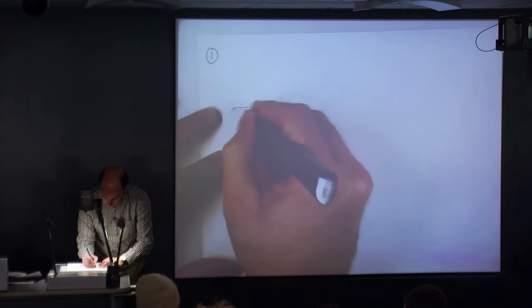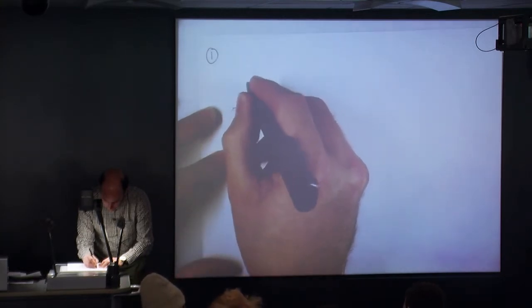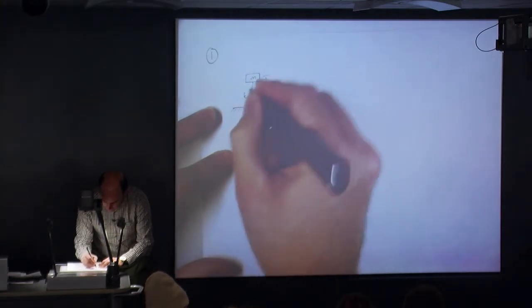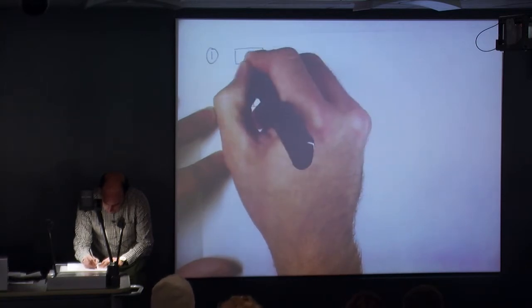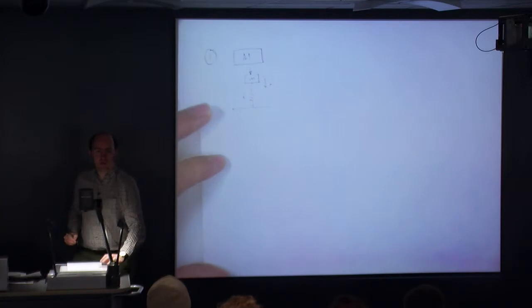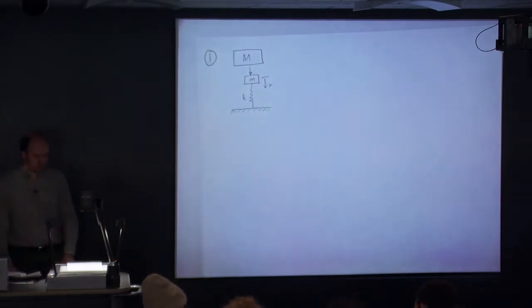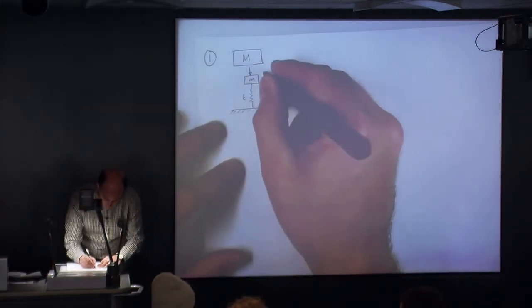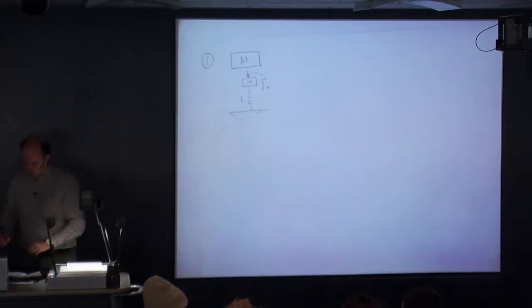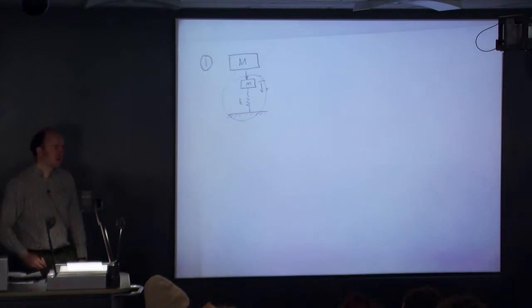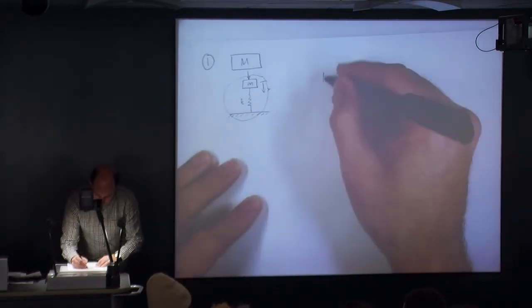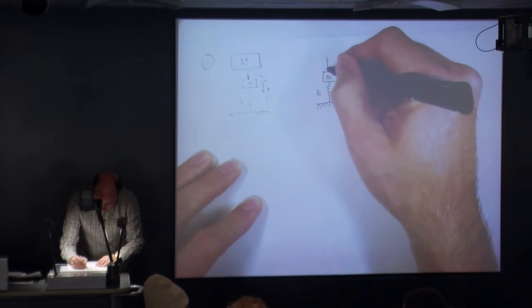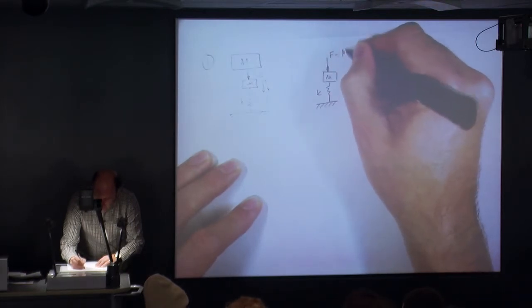So we've got our ground down here. We've got a spring. We've got m here, little m here. That's x, that's k. And then we have a big m, the object that we're weighing, being applied to that system. So obviously for this bit, there's our system, and this bit is our applied force.